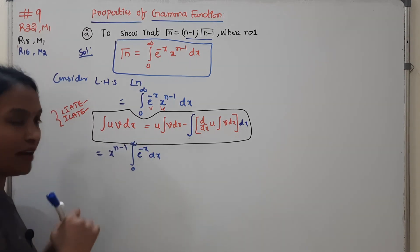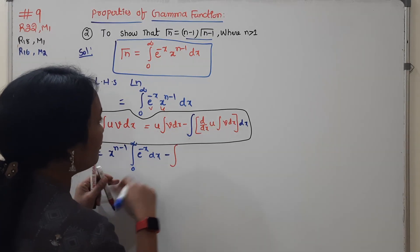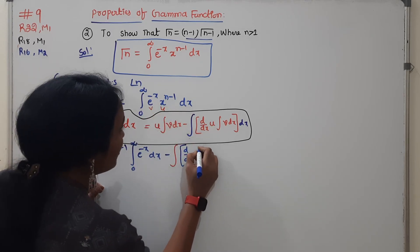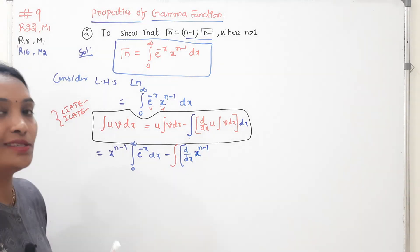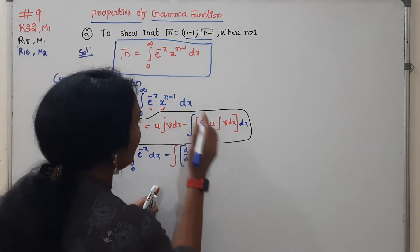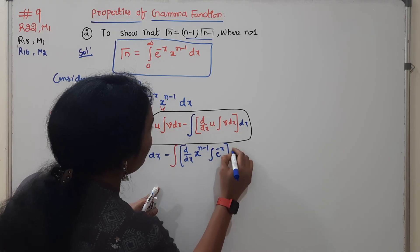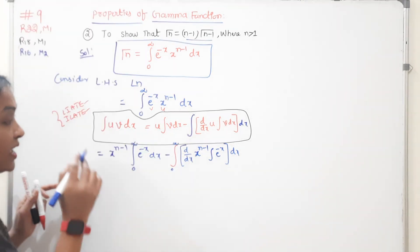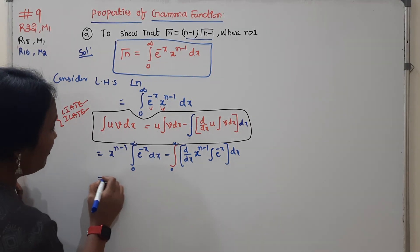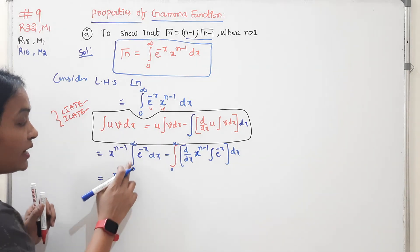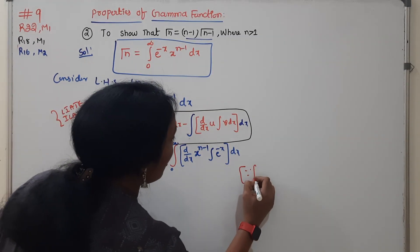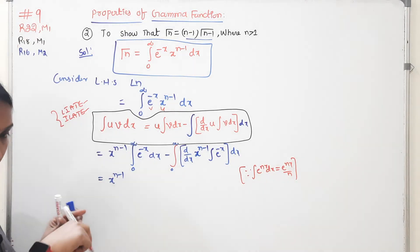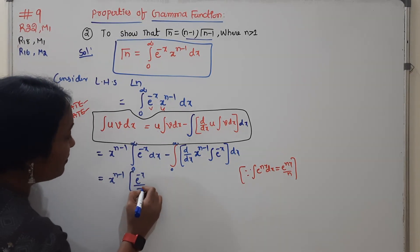The limit is 0 to infinity. Minus the integral — derivative of the first function: d/dx of x to the power of n minus 1 equals n minus 1 times x to the power of n minus 2. The integral of e to the power of minus x is e to the power of minus x divided by minus 1. Limits are 0 to infinity.